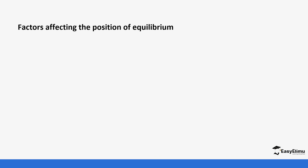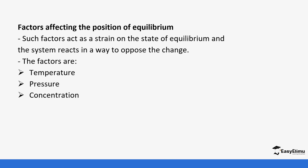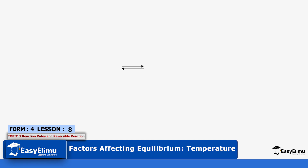Factors affecting the position of equilibrium — such factors act as a strain on the state of equilibrium and the system reacts in a way to oppose that change. These factors are temperature, pressure, concentration, and catalyst.